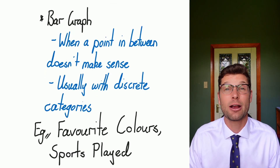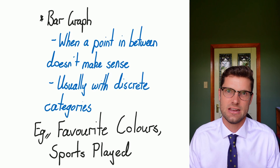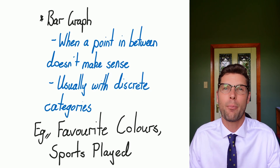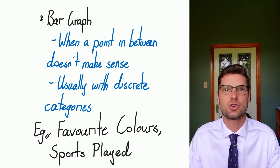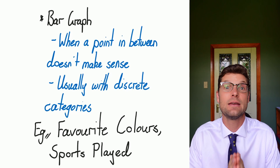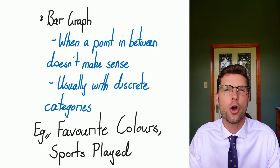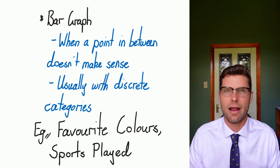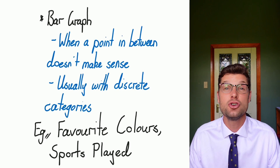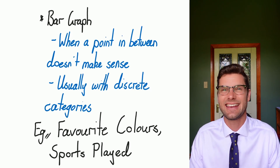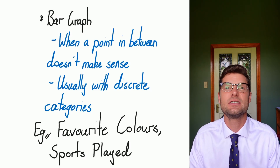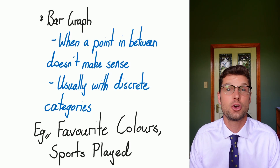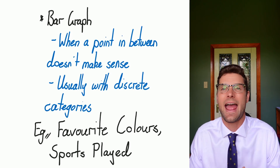If you want to use a bar graph, the complete opposite is true. You've got to determine: if I put a point in between my data sets, in between what I know for sure, if it doesn't make sense, then you can use a bar graph. We're usually dealing with discrete categories — definitely different things that we assign something to that's not a number.